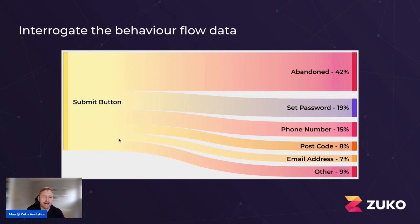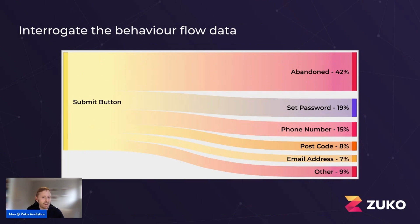This behavior flow data chart shows what happens after the submit button for abandoners. We can see that 42% drop out straight away — they probably see a sea of red error messages and give up. But the really useful information is below that: what people are doing next. We can see that the set password field and the phone number field are the second and third biggest groups — people are clicking submit, jumping back to password or phone number to try to fix it, and then subsequently abandoning. This is probably my favorite form of analysis — it very quickly gets you to where your biggest issues are and helps you develop hypotheses for improvement.